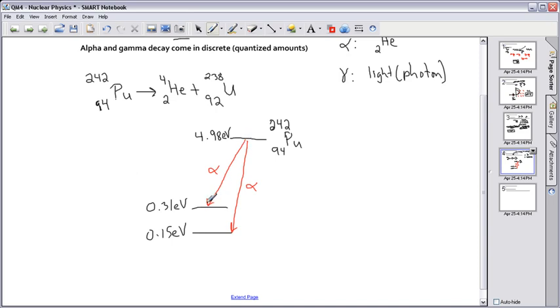If it drops from here to here, you're going to get an alpha particle with a difference in energy. But you can have a different type of alpha particle. These alpha particles will come in different quantized amounts because they can only come from here to here or here to here. They can't go to something in the middle because there is no energy state possible there.